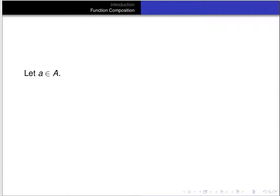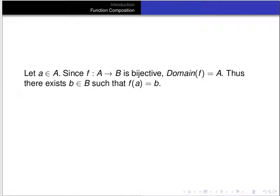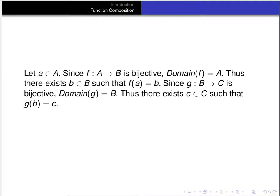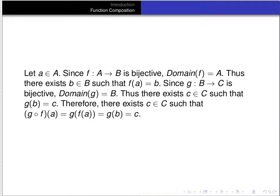Let a be an element of A. Since f is bijective, the domain of f is A, so there's some b in B such that f(a) = b. Since g from B to C is also bijective, the domain of g is B, so there's an element c in C such that g(b) = c. Therefore, there exists some c in C such that g ∘ f(a) = g(f(a)) = g(b) = c. We've shown that the domain of g ∘ f is all of A — no matter what you pick in A, g ∘ f assigns a value to it in C.